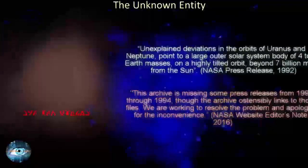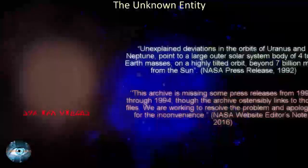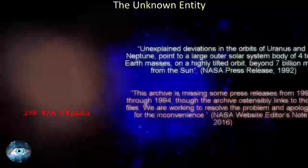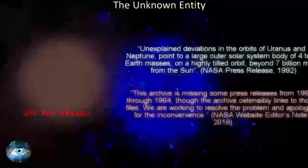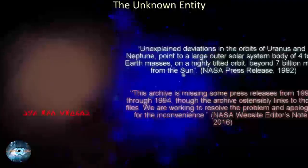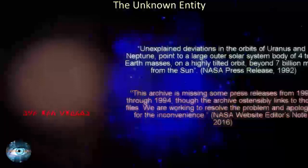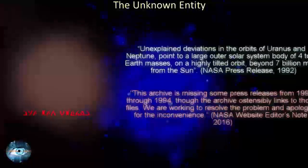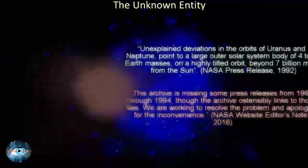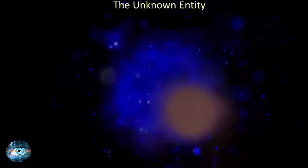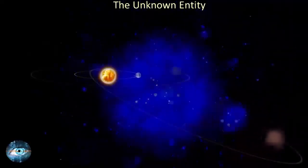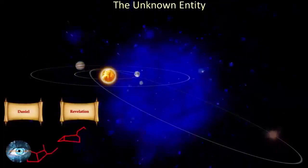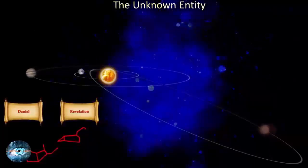NASA has now had more than two decades to resolve this problem and still has not been able to bring back these missing press releases. The lack of information about this object in the mainstream media is certainly telling us a thing or two. It is clear that NASA has removed these articles intentionally to keep this information from the public. But what would be their motive for hiding this information, given that this was once public knowledge? Is this maybe because of this object's current trajectory, and what it could imply for those living on earth in the years to come? I believe God's word provides this information to us in the prophecy and vision that Daniel was told to seal up.